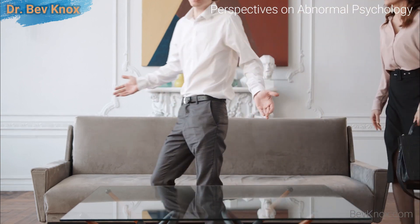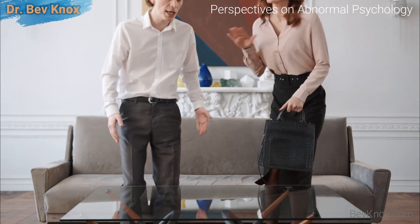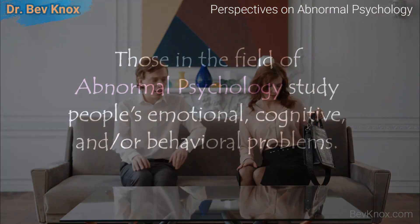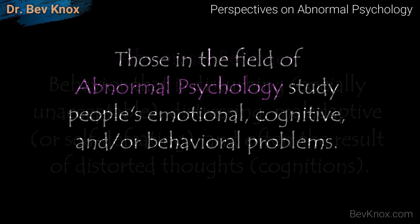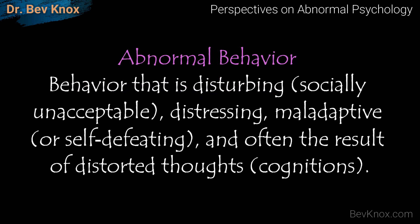In this lecture, we will review the different perspectives on abnormal behavior. Those in the field of abnormal psychology study people's emotional, cognitive, and behavioral problems. Abnormal behavior may be defined as behavior that is disturbing, which is socially unacceptable, distressing, maladaptive — which is self-defeating — and often the result of distorted thoughts, which are cognitions.